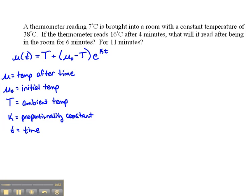Here we have our formula for Newton's Law of Cooling. In each one of these parts here, I've identified the mu, which is this one right here, this is our mu, is the temperature after some time. Mu naught is our initial temperature.